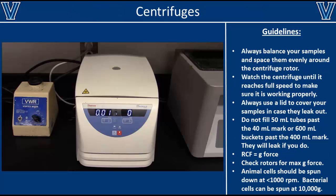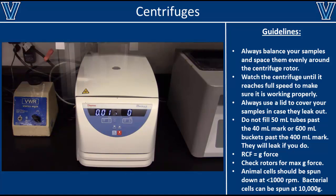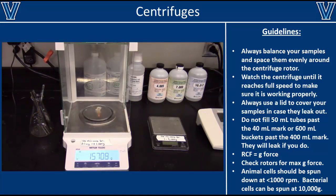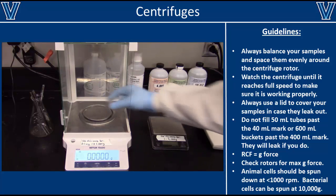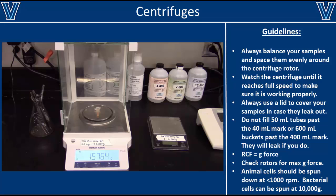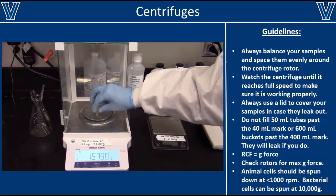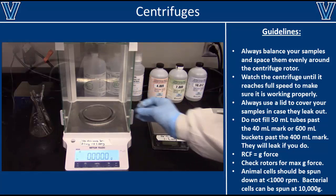Centrifuges are also commonly found in most labs. They're used to separate particles of different densities by spinning them rapidly to generate a high G-force. Since most centrifuges do operate at rather high speeds, it is important that you know how to properly use them to avoid damaging the centrifuge or harming yourself. The most important thing you need to know about using a centrifuge is that any samples you put on the rotor must be properly balanced. Use an analytical balance to make sure the weights of your samples are equivalent and adjust them as necessary.